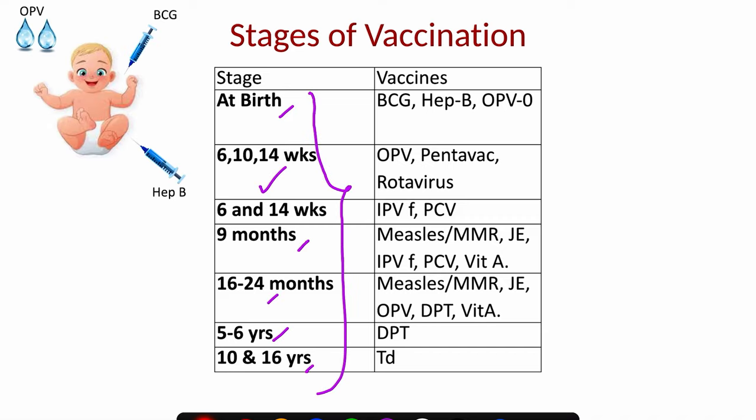So at birth, we need to provide 3 vaccines, i.e. BCG, Hepatitis B, and OPV zero dose.